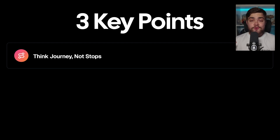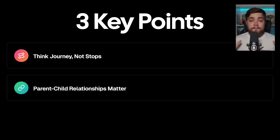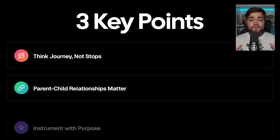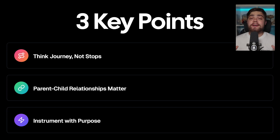Let's bring this together with three key points to remember. Number one: think about the journey, not the stops. A trace is your entire request journey — like a road trip from start to finish — and spans are your stops along the way. Never create multiple traces when you really need spans within a single trace. Number two: parent-child relationships matter. Always connect your spans properly using context. A disconnected span is like a mystery stop on the journey — make those connections explicit. Number three: instrument with purpose. Don't just trace everything because you can. Focus on critical paths, performance bottlenecks, and error-prone areas. Target quality telemetry data over quantity.